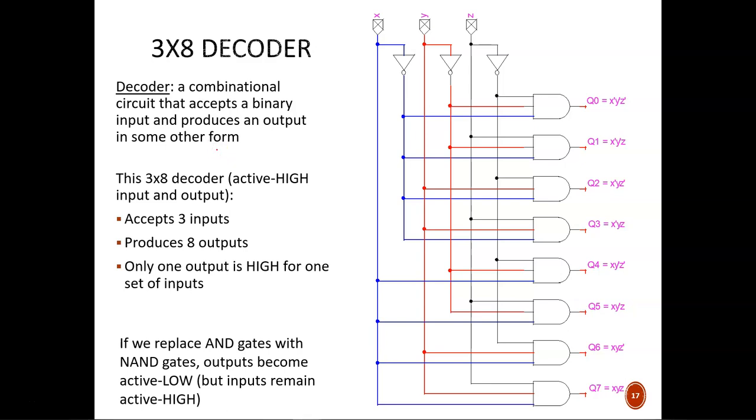In this example, the input binary code is 3 bits, and the output other form is a min-term. You can also think of the output as a single selection of a decimal value. A binary code comes in, and one special line is activated on the output.